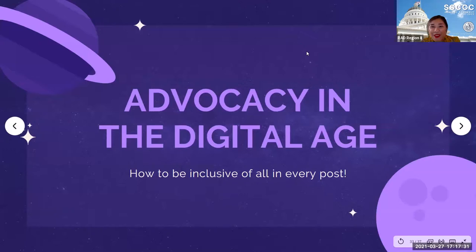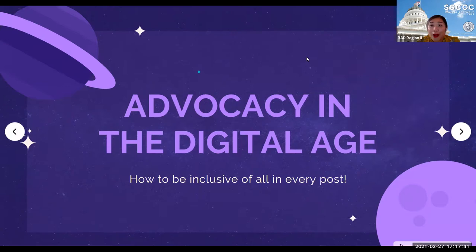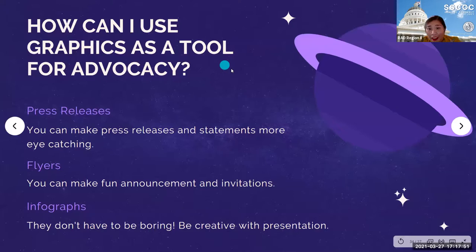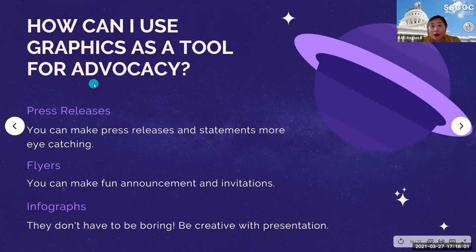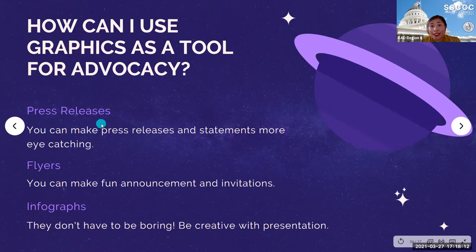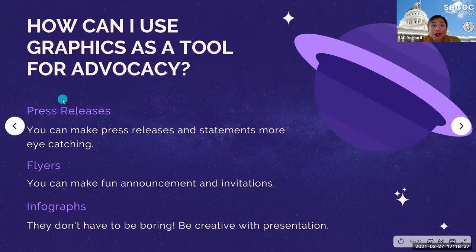Here comes the fun part of our workshop — we're going to talk about advocacy in the digital age. How do we apply graphics to our advocacy? Graphics can be used as a tool of advocacy. This is not limited to, but some examples include: press releases — the SSCCC puts out a press release every so often, and we have one from a few months ago on our Instagram. We make flyers for all of our events, like our deaf town hall awareness flyer. And there's always infographics somewhere that we also use, and that's probably the most common way we've seen it.